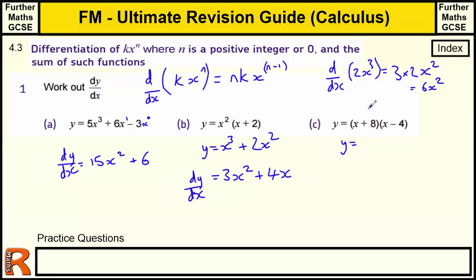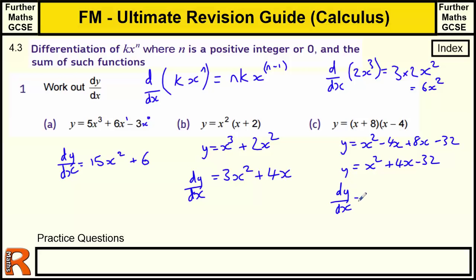Again, we've got double brackets, so we multiply them out first. We've got x times x, which is x squared; x times minus 4, which is minus 4x; 8 times x; and 8 times minus 4 is minus 32. Simplifying: x squared plus 4x minus 32. Then we differentiate: 2x, and we take 1 off the power, so that's just x. Power of 1 on the 4x — so 1 times 4 is 4 — and the constant disappears. We shouldn't write x to the 0; we should recognise those as just x and just the constant.